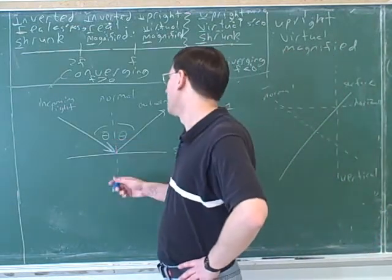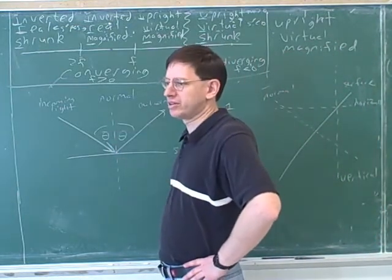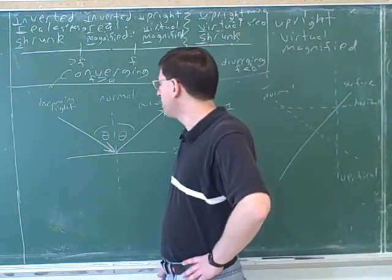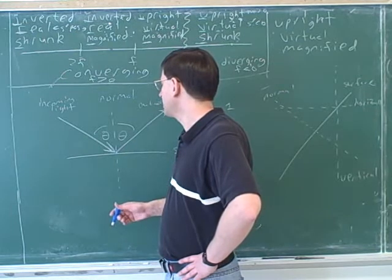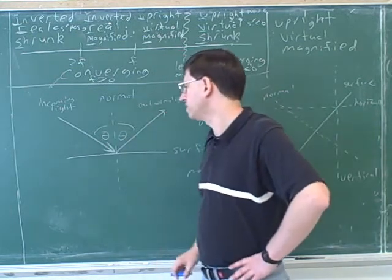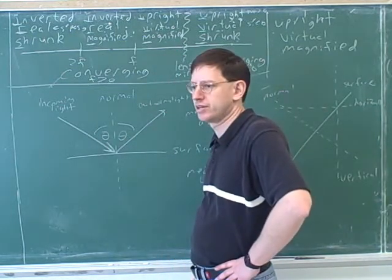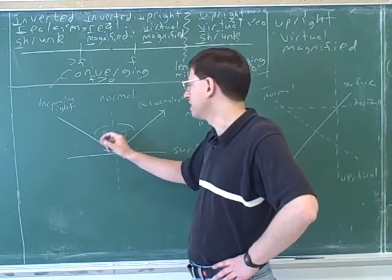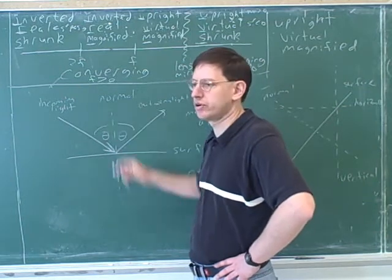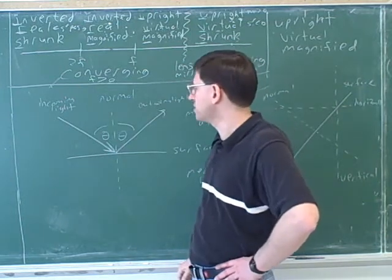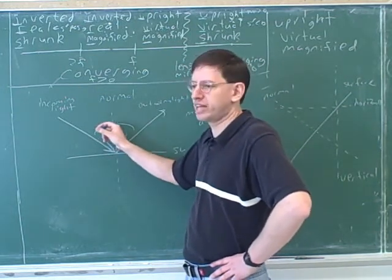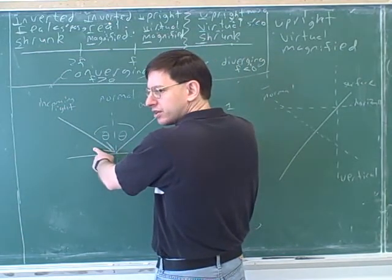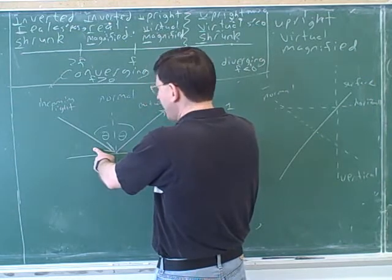Whereas theta here, depending on the outgoing light, they both have the same angle. Now notice, is theta measured with the normal or with the surface? With the normal. Just from the picture you can see that it's an angle with the normal. It's the angle between the light and the normal. That's just the convention. The convention is that when we use the symbol theta, that's for the angle with the normal. What would you say is the relationship between these two angles with the surface?